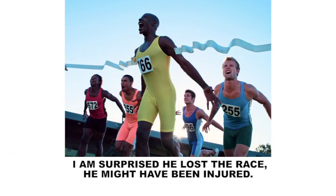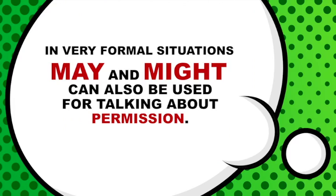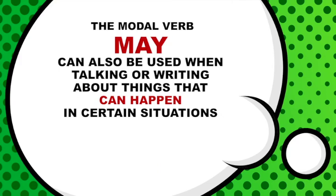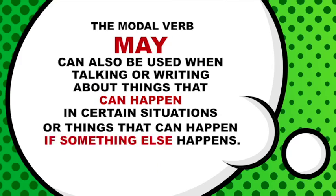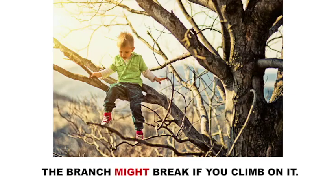May and might can also be used to talk about the past with uncertainty. In the sentence 'I am surprised he lost the race. He might have been injured,' the action took place in the past. In very formal situations, the words 'may' and 'might' can also be used for talking about permission. For example: 'May I sit here?' The modal verb 'may' can also be used when talking about things that can happen in certain situations. For example: 'The branch might break if you climb on it.'